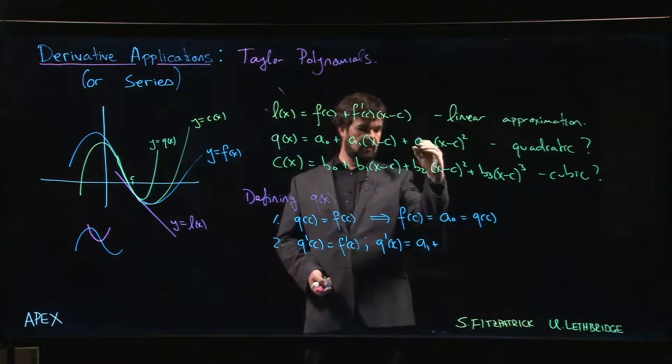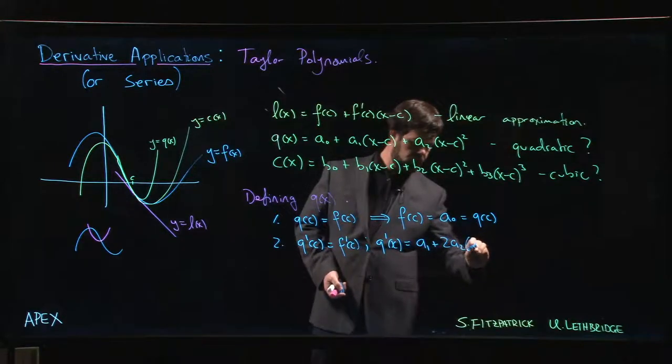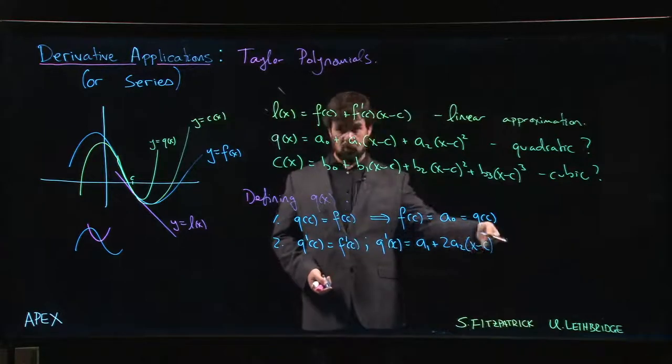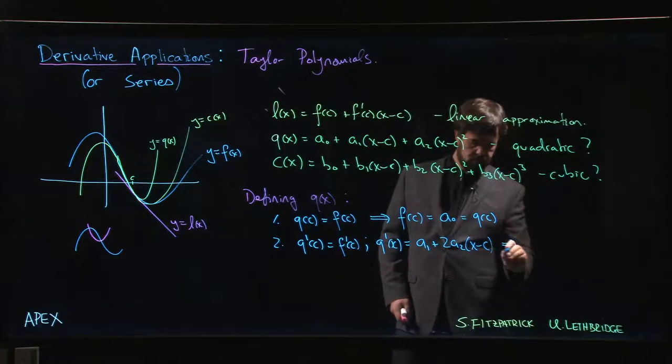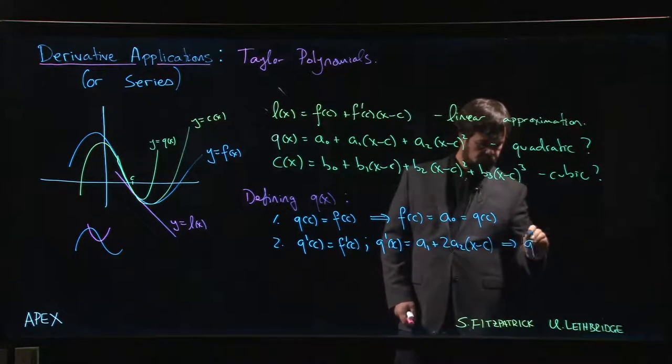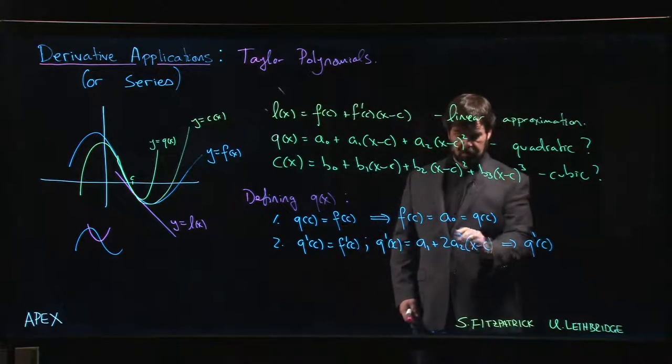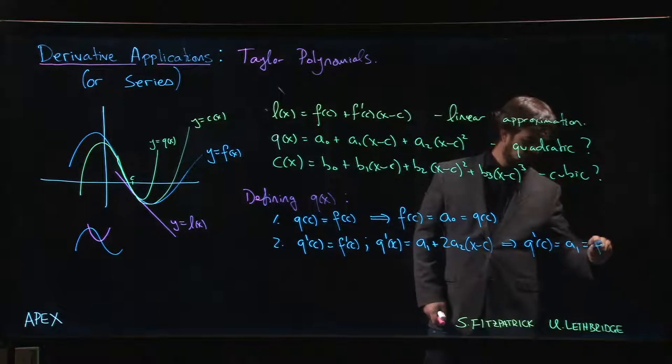So that means that Q prime of c is, well again this is going to go to 0, so Q prime of c is just a₁, and that's what we want to be F prime of c.